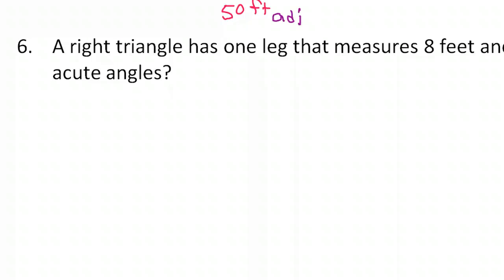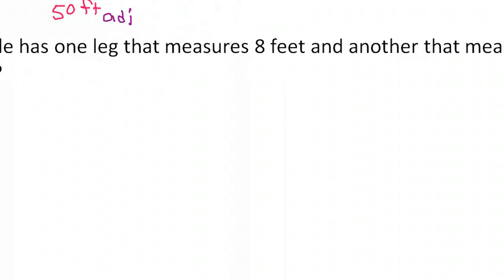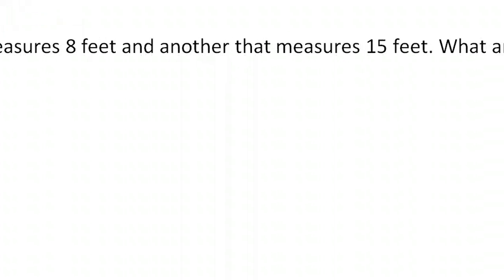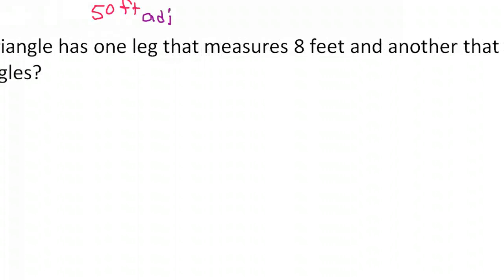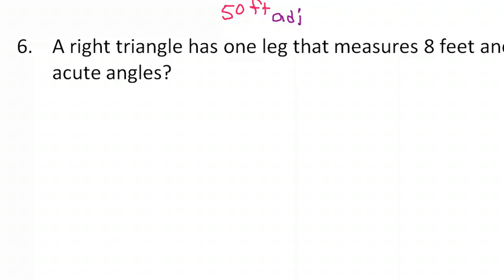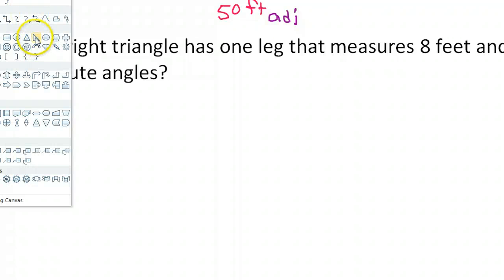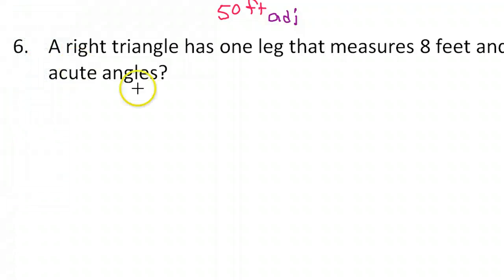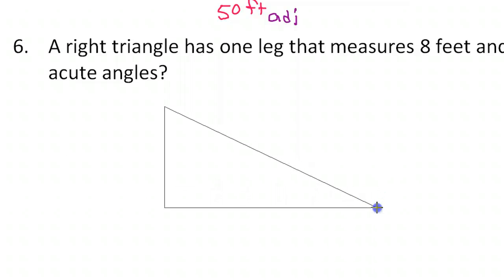Last but not least: a right triangle has one leg that measures eight feet and another that measures 15 feet. What are the measures of the acute angles? Well, this is not really a real world problem — it feels like a bit of a cheat, just putting feet onto a right triangle.